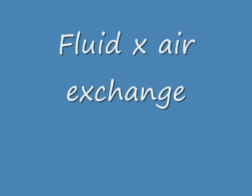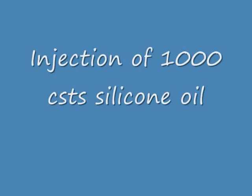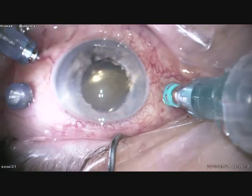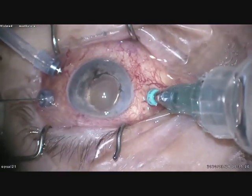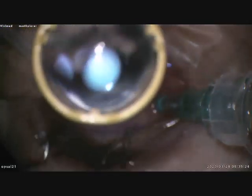So I give up and decide to re-inject silicone oil into this eye. This is a fluid-air exchange, followed by injection of 1000 centistoke silicone oil. My setup is usually 27 gauge with a 25 gauge trocar cannula.